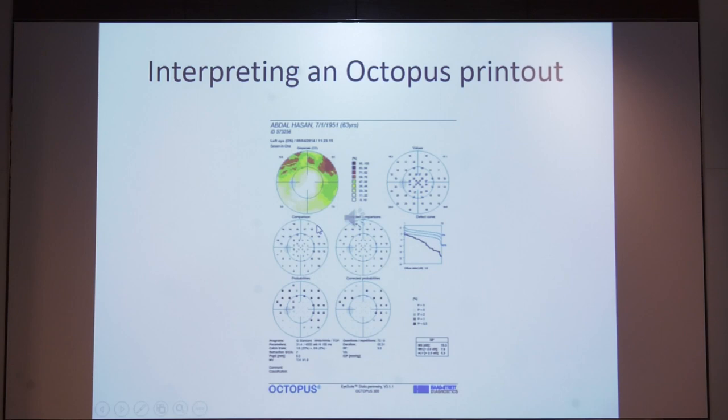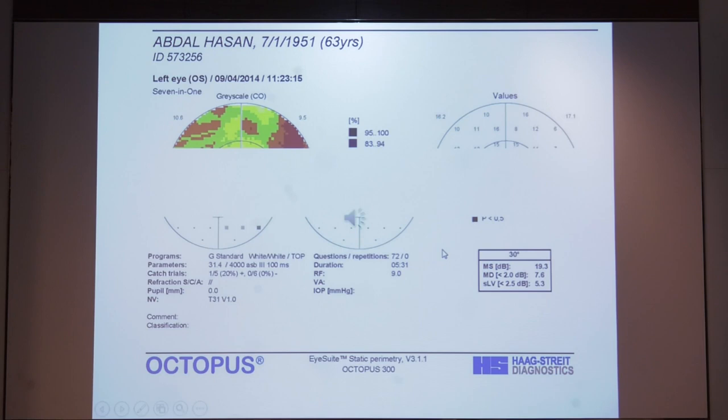This is the typical 7-in-1 printout that is seen in an octopus perimeter. Most of these parameters are similar to that seen in the Humphrey's visual field. An additional Bebe's curve is seen here. The top half of this printout mentions the patient details, the date, as well as the eye being tested. The bottom portion carries the parameters of the test. And two specific features you can see here are the catch trials and the questions slash repetitions. These are referring to the fixation losses and false positives, similar to what is seen in the Humphrey's perimeter.